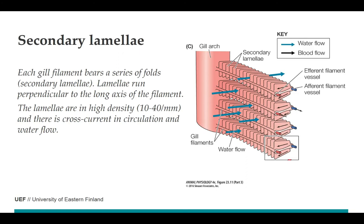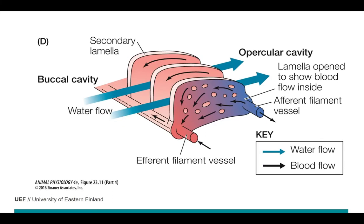Each gill filament has a series of folds called secondary lamellae. Water flows in one direction alongside the lamellae while blood streams in the opposite direction — a counter-current system. There are 10 to 40 lamellae per millimeter. This counter-current mechanism is the site of gas exchange where oxygen is transported from the environment to the circulation, and it makes the process quite effective.